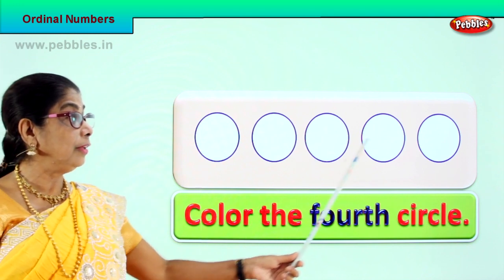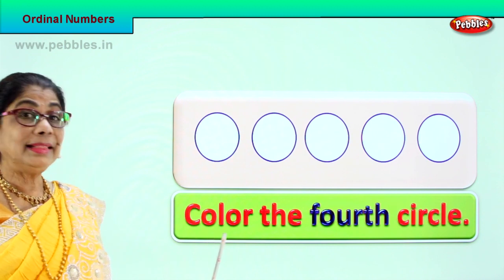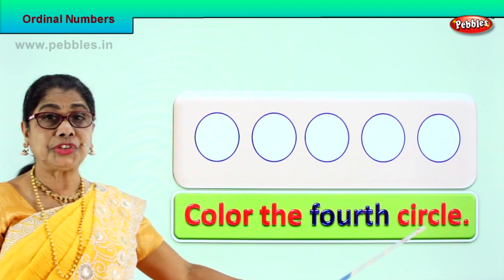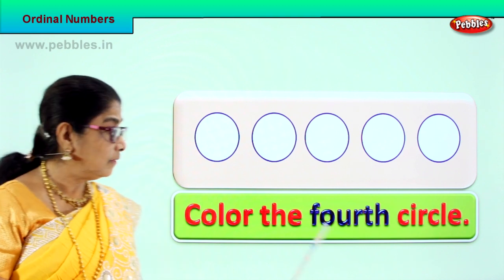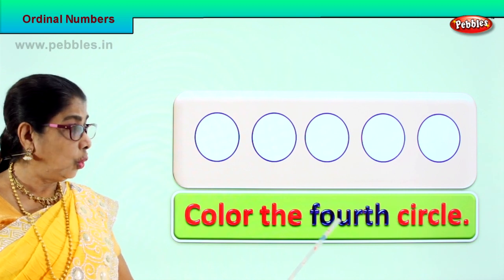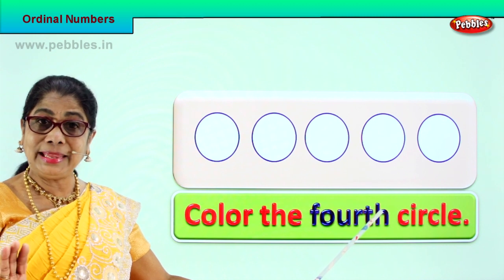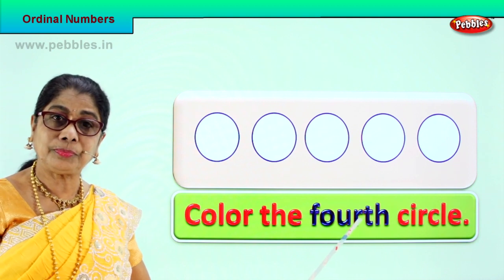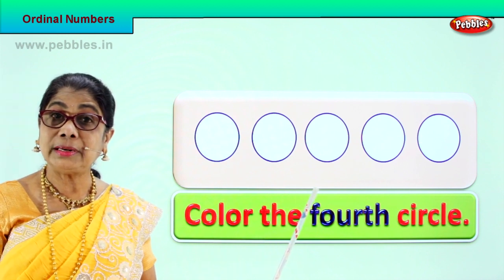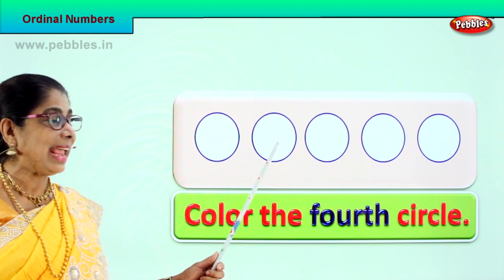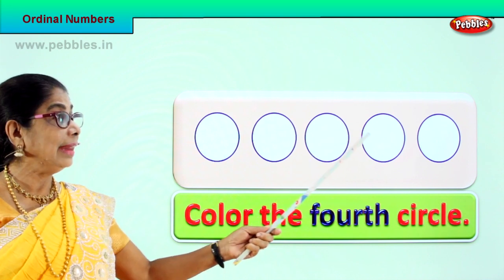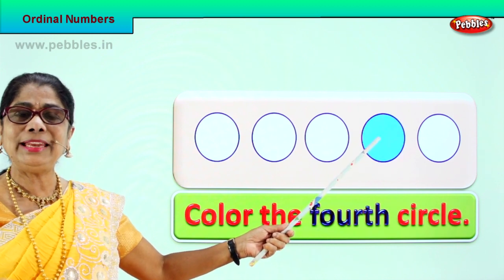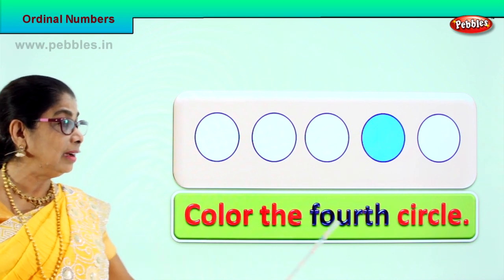Here you have one, two, three, four — there are five circles here. They are asking us to color. Color the fourth circle. Which circle are you supposed to color? Fourth. Spell fourth: F-O-U-R-T-H. The spelling four — all you need to add is TH. Four. Fourth. Let us look at the fourth circle before we color. First circle, second circle, third circle, and this is the fourth circle. We are asked to color the fourth circle.